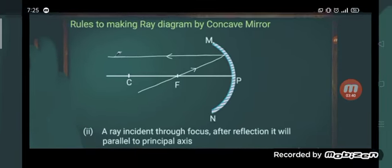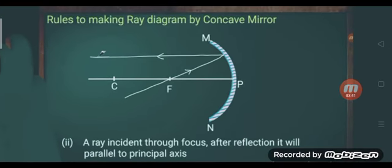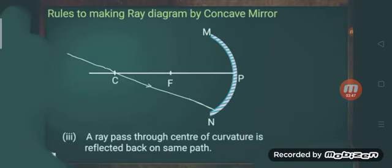Both rules are opposite to each other — if a ray comes from the focus it goes parallel, and if it comes parallel it goes through the focus. The third rule is: a ray passing through the center of curvature is reflected back on the same path.